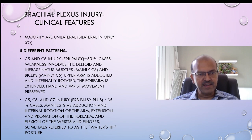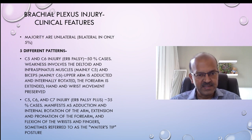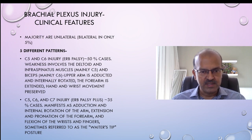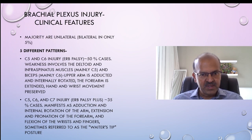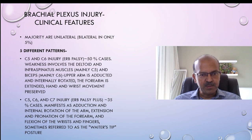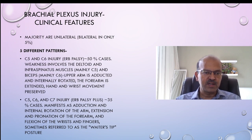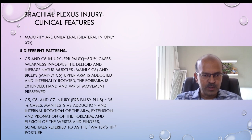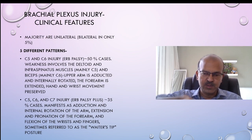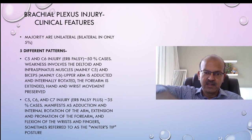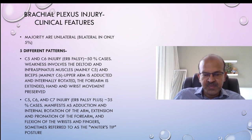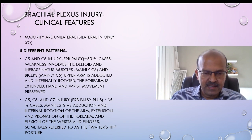We also have the C5, C6, and C7 injury — Erb's palsy plus — which is the next most common with 35 percent of the cases. It manifests as adduction and internal rotation of the arm, extension and pronation of the forearm, and flexion of the wrists and fingers — sometimes referred to as the 'waiter's tip' posture. This carries a slightly higher risk of persisting weakness.